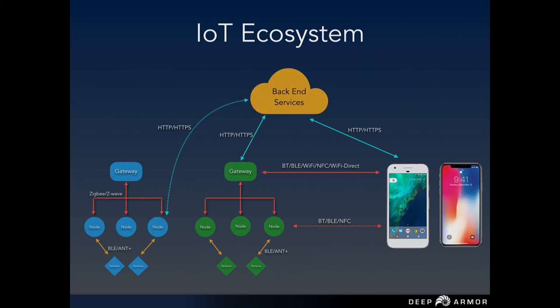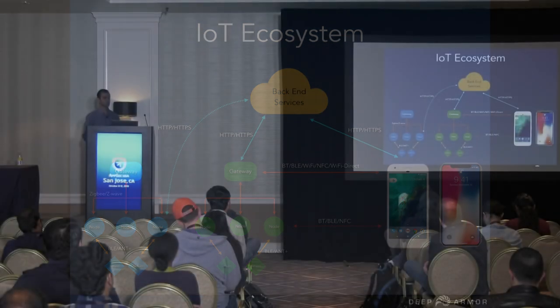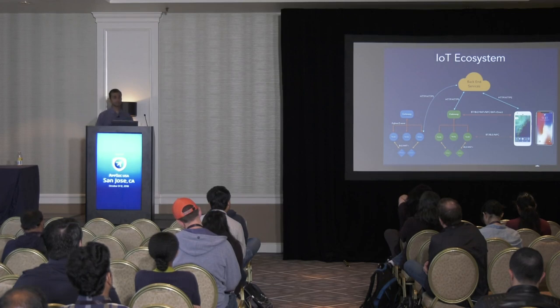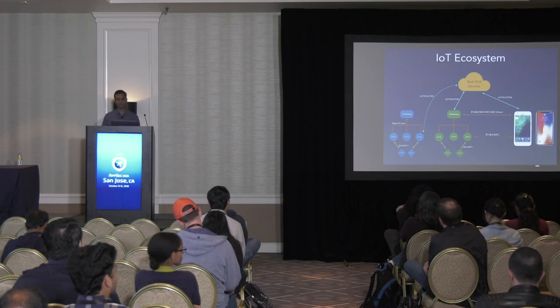It's also the communication channels that exist between these components. On the device side you have nodes — really tiny form factor devices with sensors that collect data — and they push them up to the gateway. The gateway collects and aggregates all this data and either pushes it directly to the cloud or uses the mobile conduit to push data back to the cloud. From a protocol point of view, you have a host of protocols like Bluetooth, BLE, Wi-Fi, Wi-Fi Direct, NFC, HTTP, and MQTT, which is more popular in IoT.